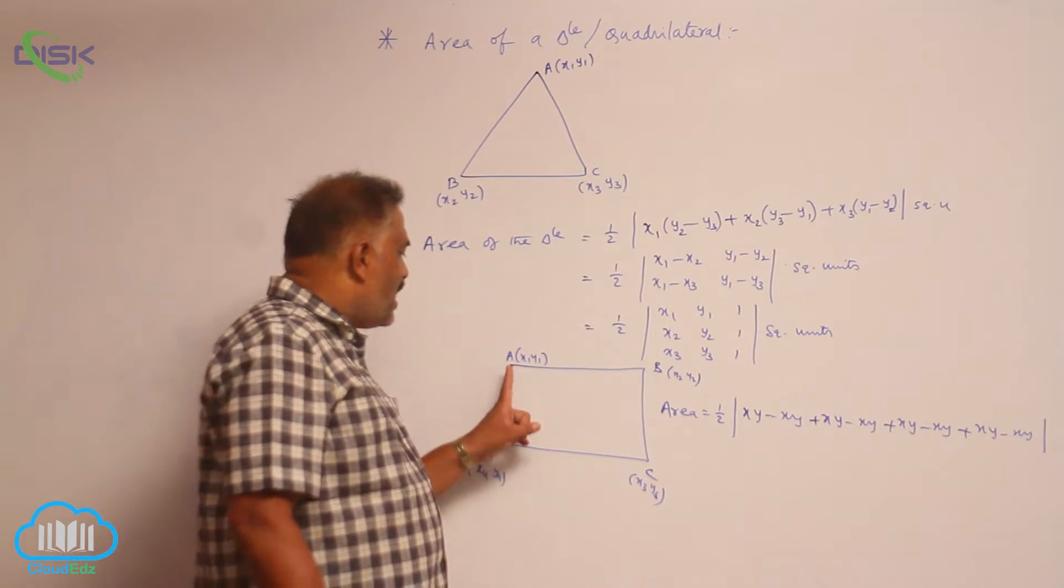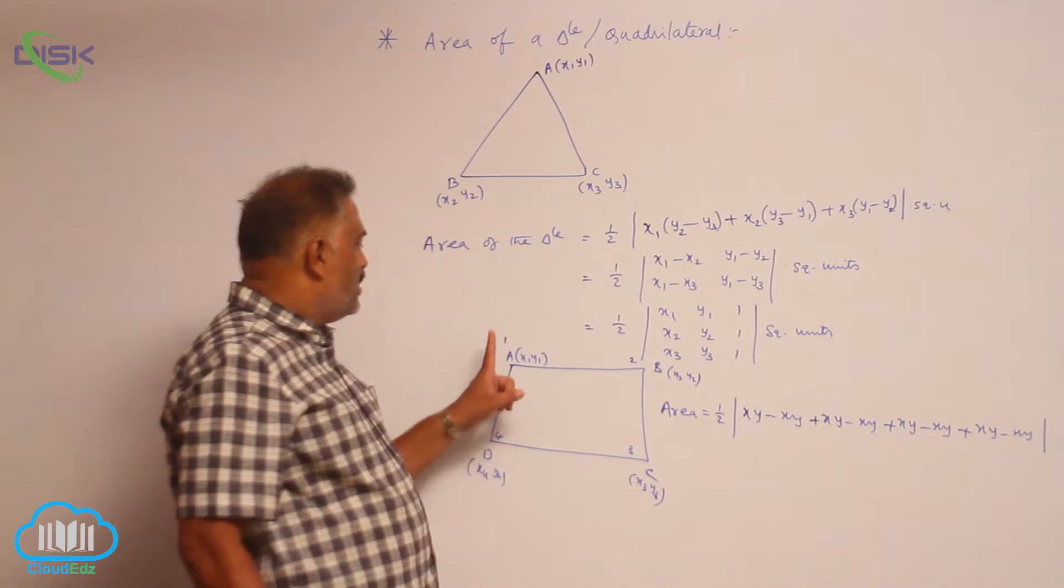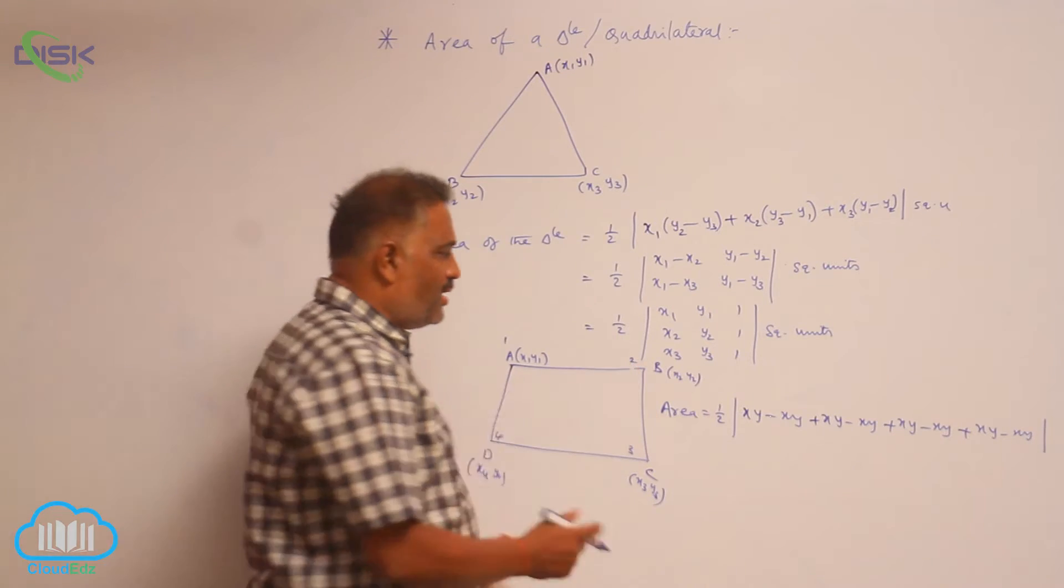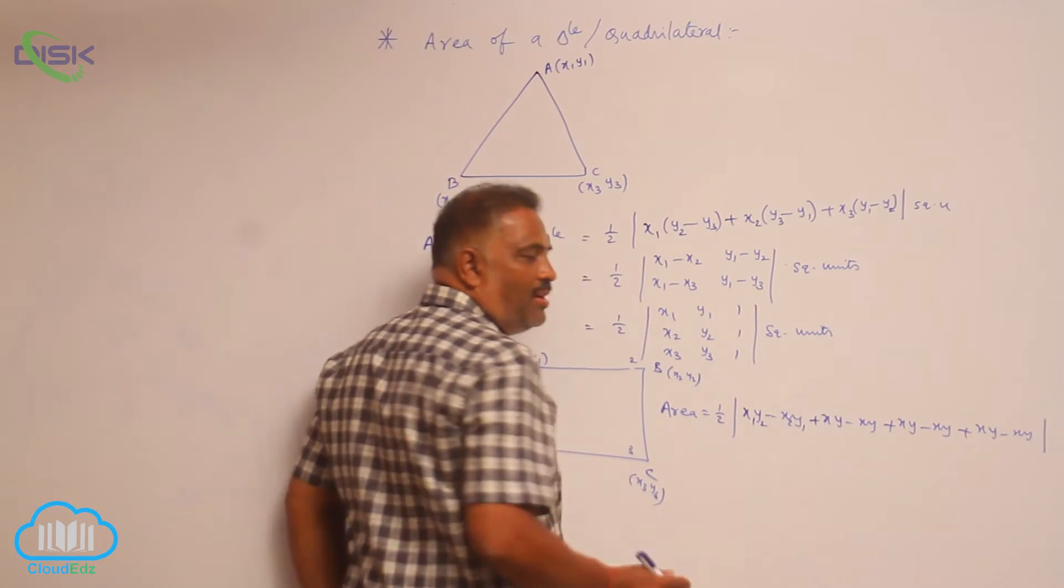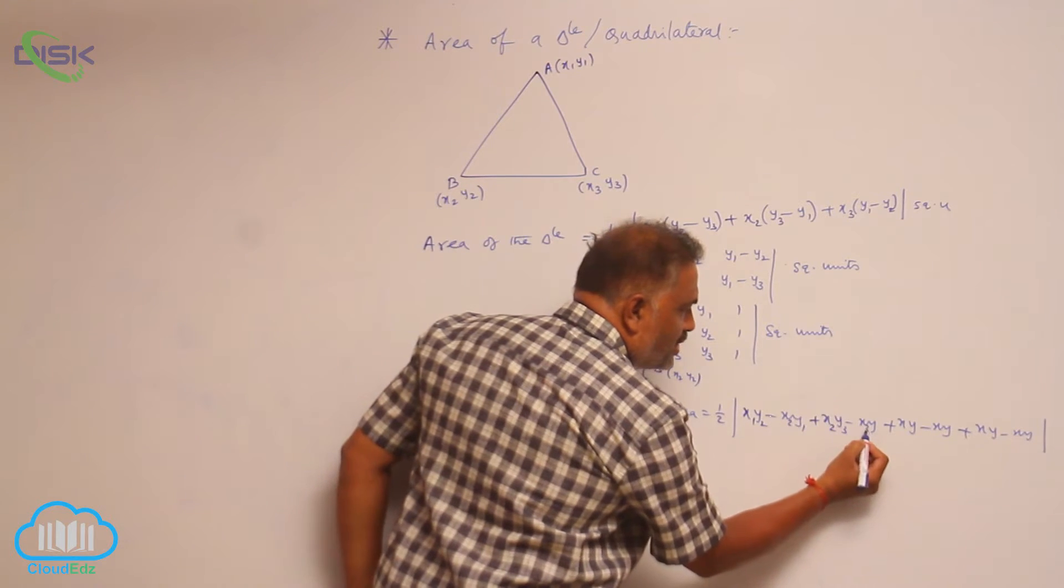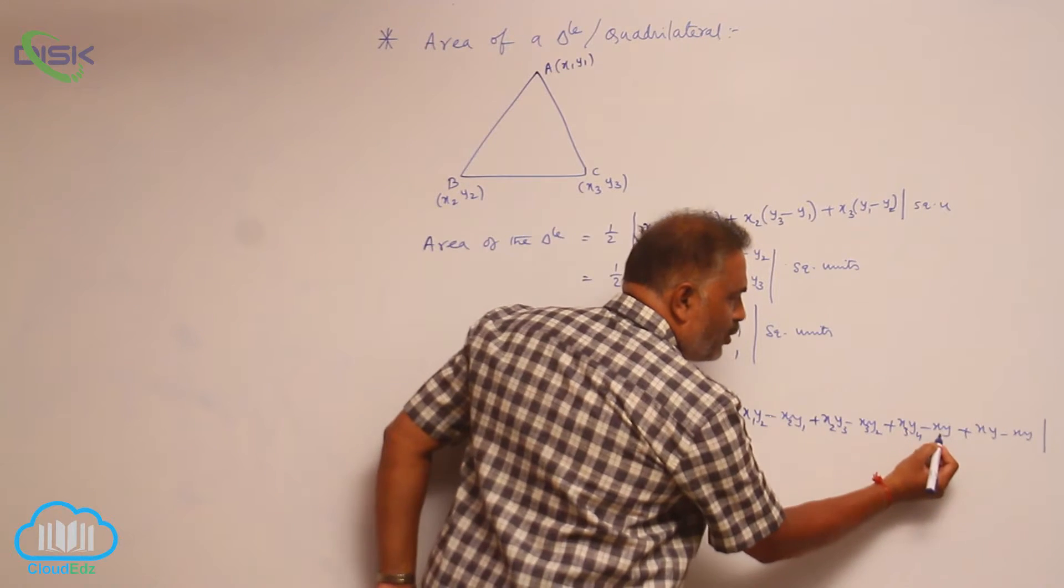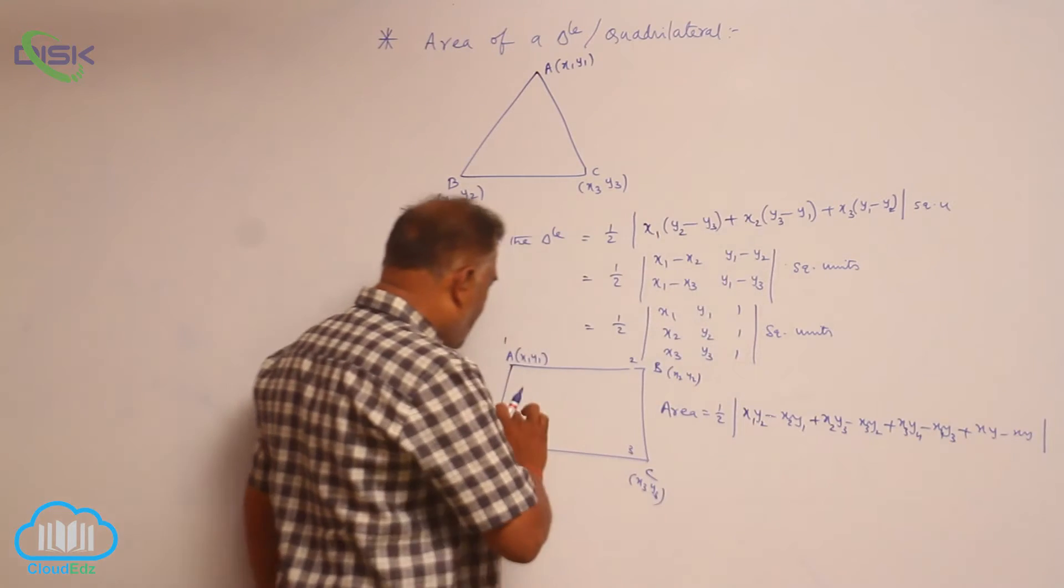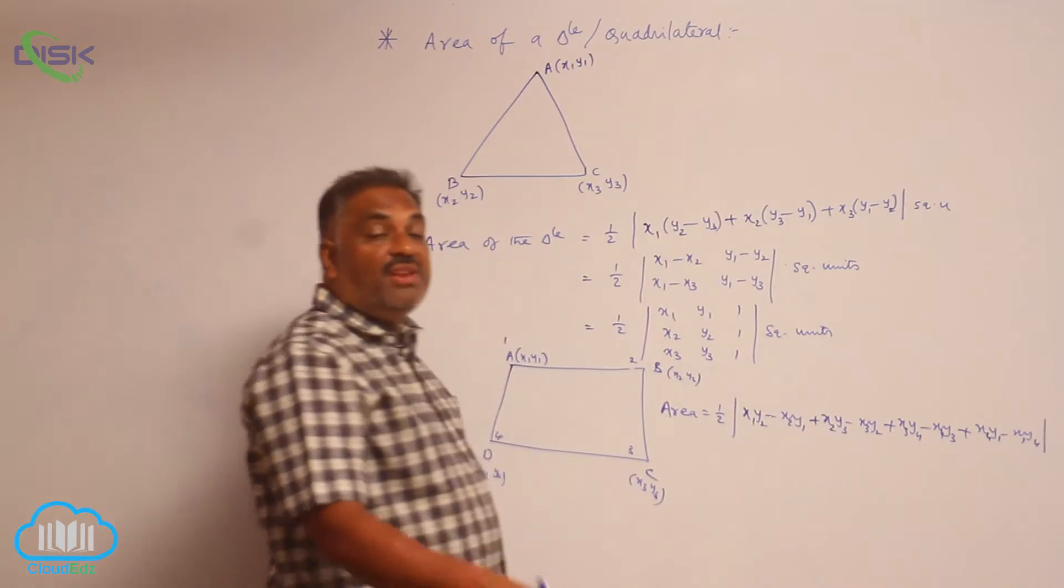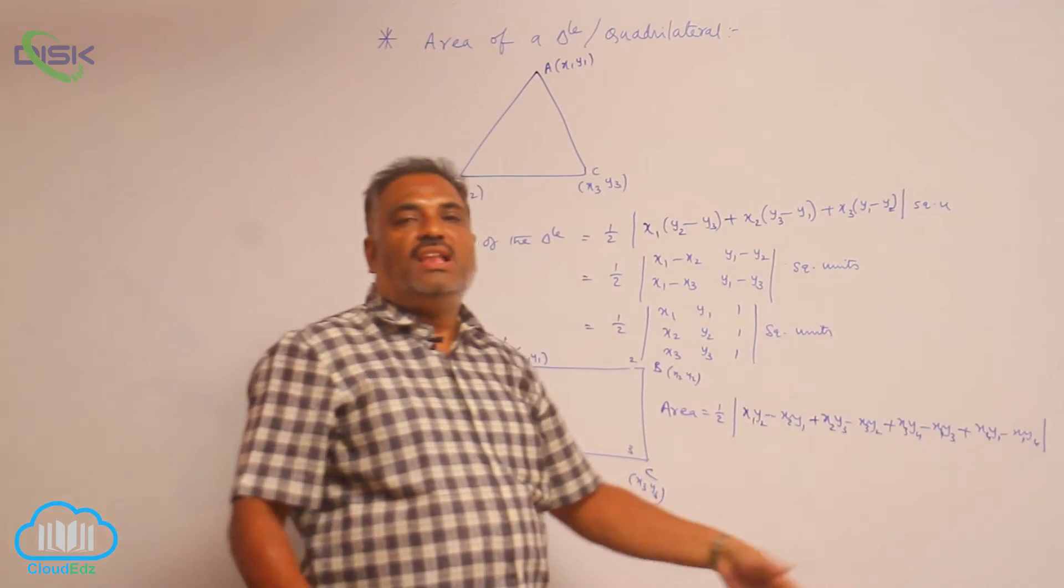Now start - just treat 1, 2, 3, 4. Now start with 1, 1, 2, reverse 2, 1 - write x1y2 and x2y1. Next again 2, 3, reverse 3, 2 - x2y3, x3y2. Then comes 3, 4, 4, 3 - x3y4, x4y3. Again 4, 1, 1, 4 - x4y1, x1y4. Even if you are given a pentagon, you can add one more xy minus xy like this - hexagon, heptagon, and so on like this.